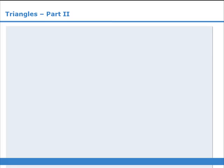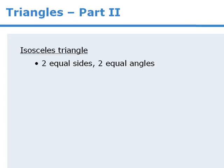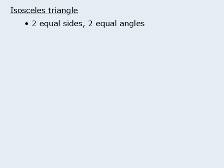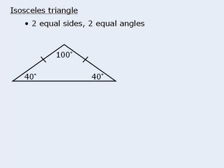In this lesson, we will examine the properties of two types of triangles, and we will study two formulas for finding the area of a triangle. The first triangle we will examine is an isosceles triangle, which has two equal angles and two equal sides. Here is an example of an isosceles triangle.